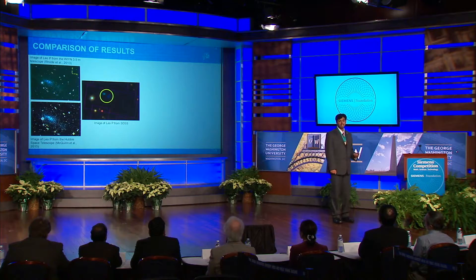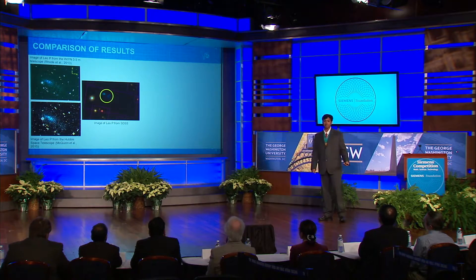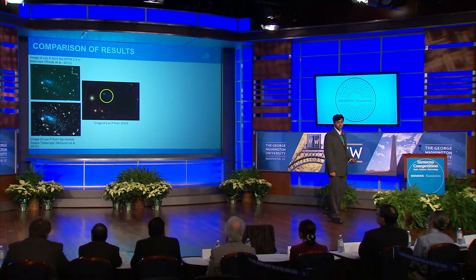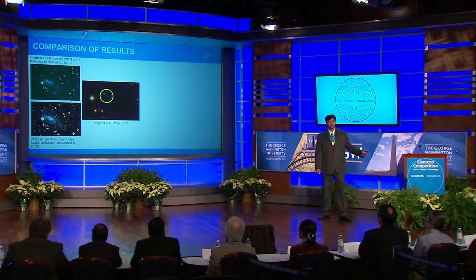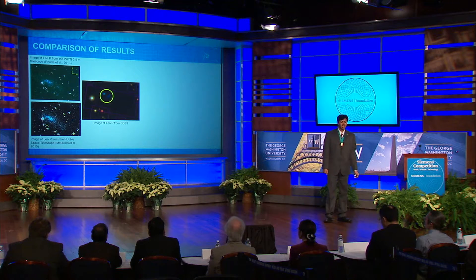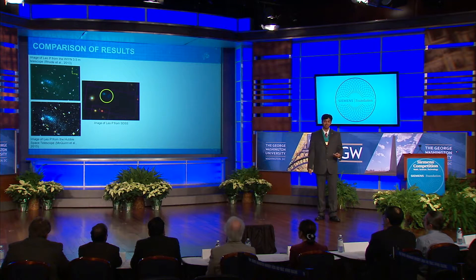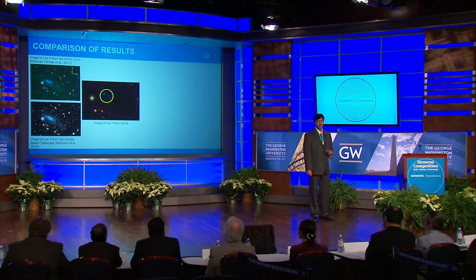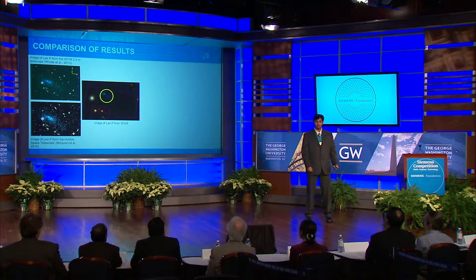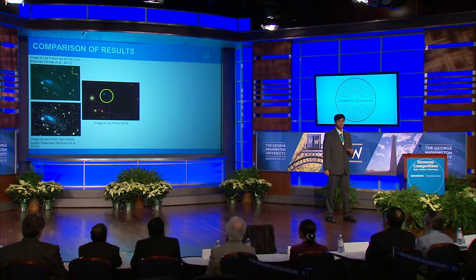The statistical analyses helped uncover some relationships between key parameters. But the first major test of the bounding box algorithm was comparing it to two known ADGs, Leo P and Leoncino, from the ALFALFA survey. On the right is the SDSS image of Leo P, and on the left are images from the 3.5-meter WIYN telescope and Hubble. In the SDSS image, Leo P was able to be resolved into its constituent photometric objects, so it was identified by both the bounding box and blue clustering algorithms.